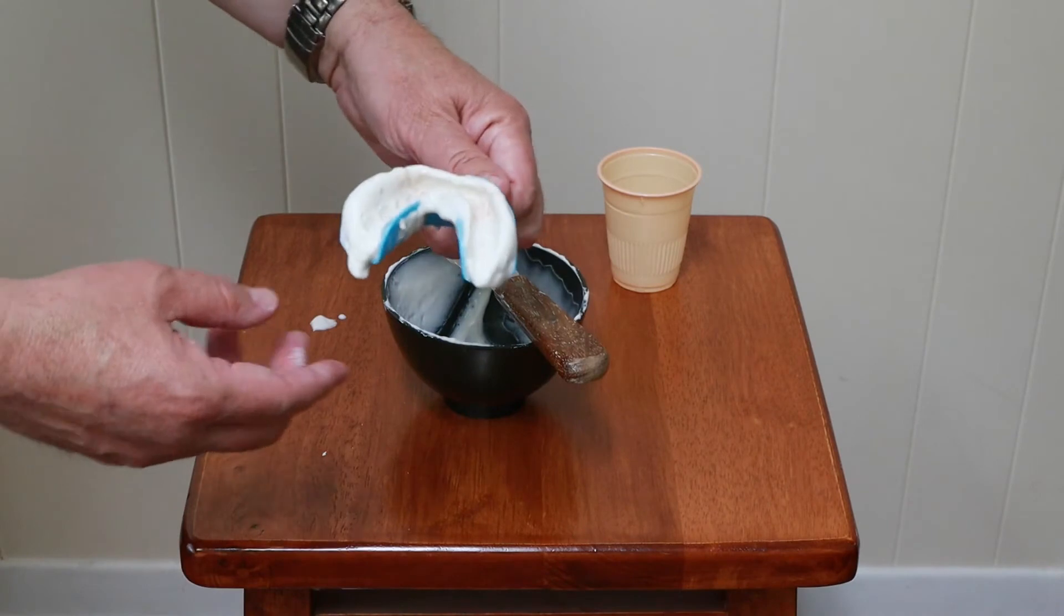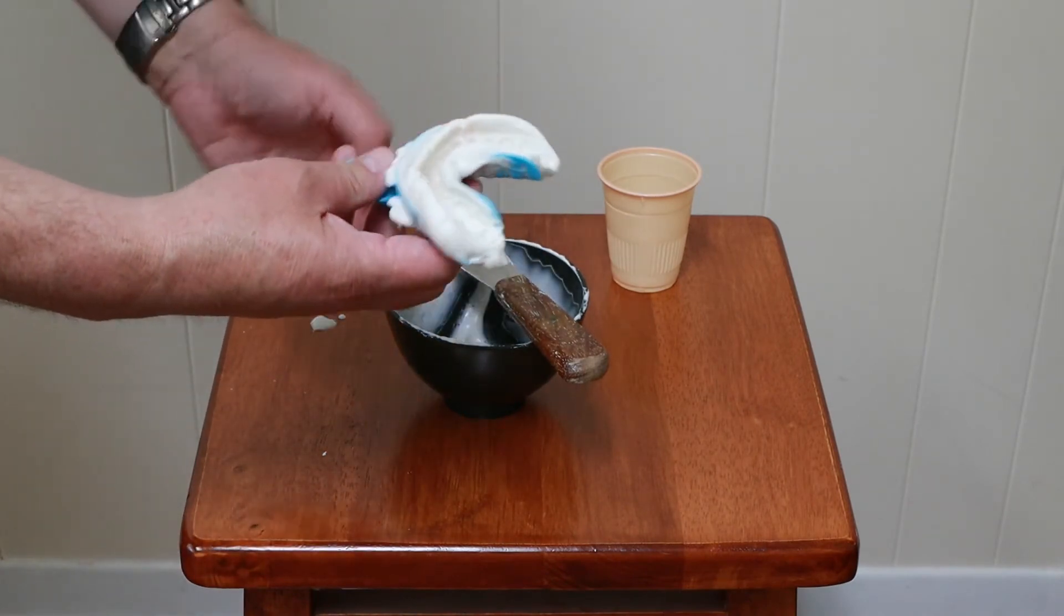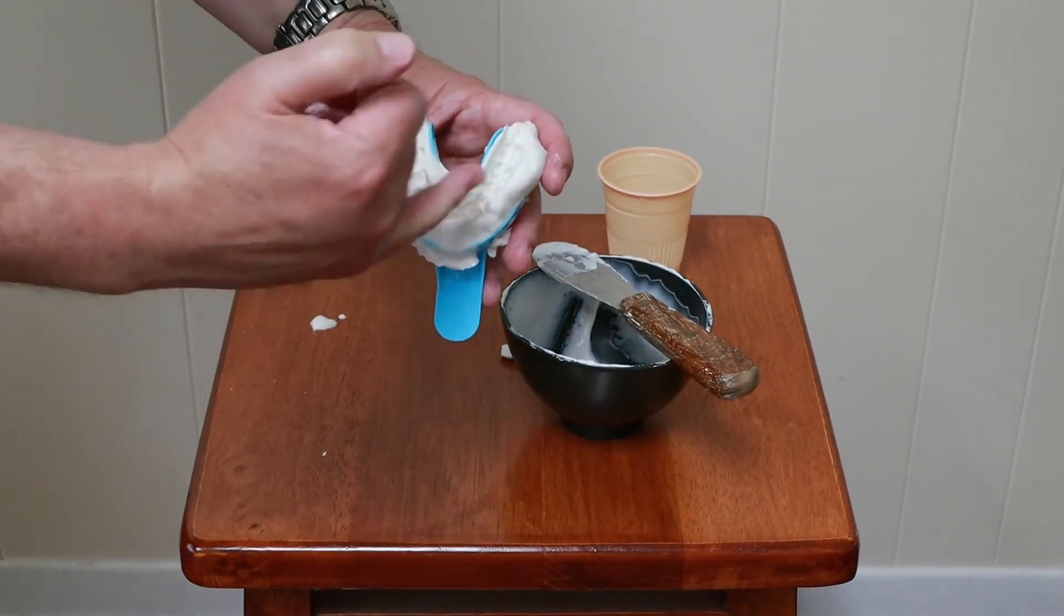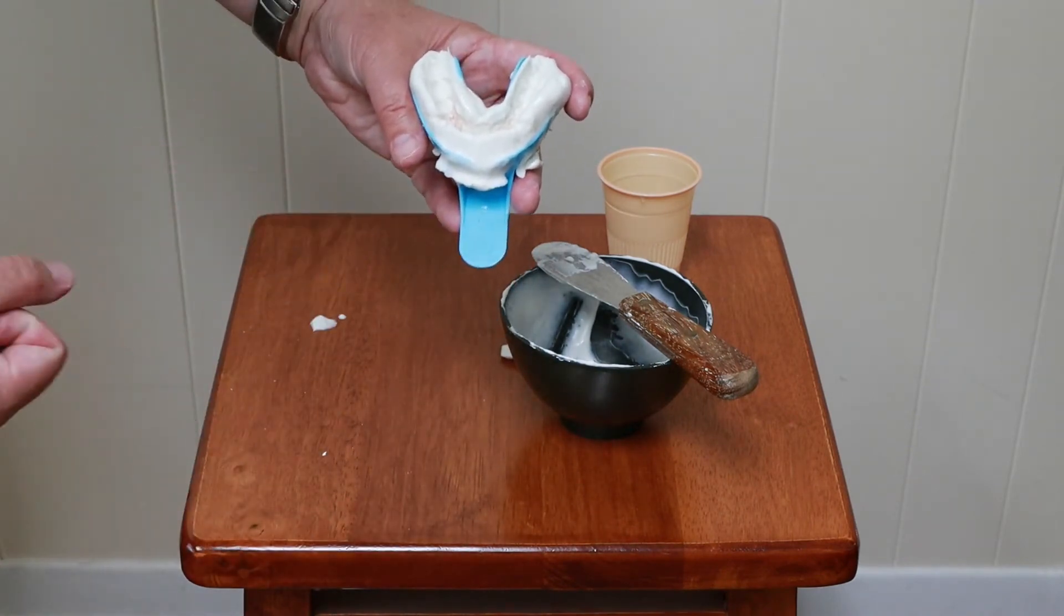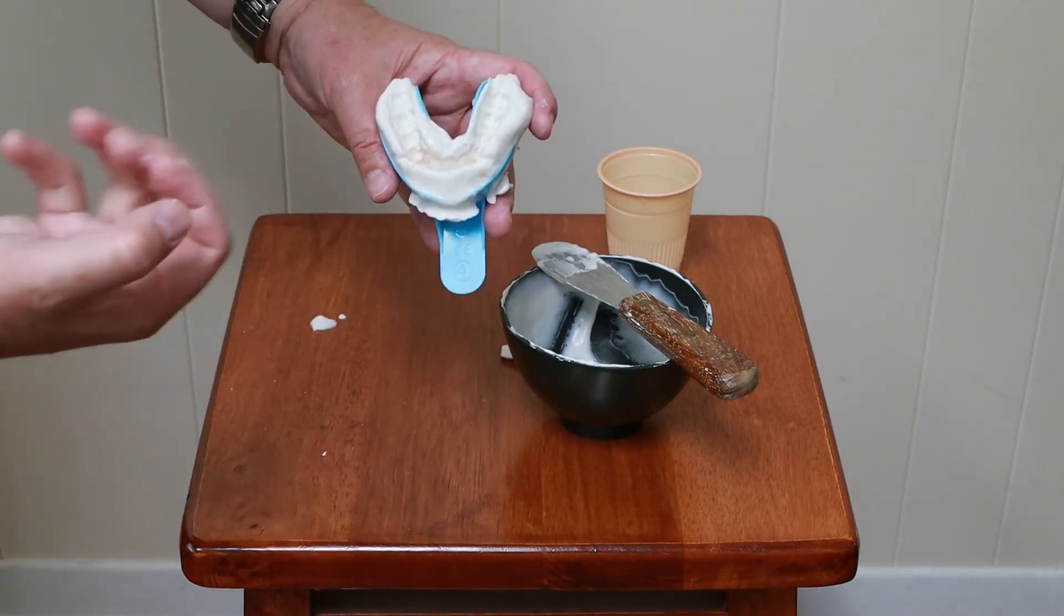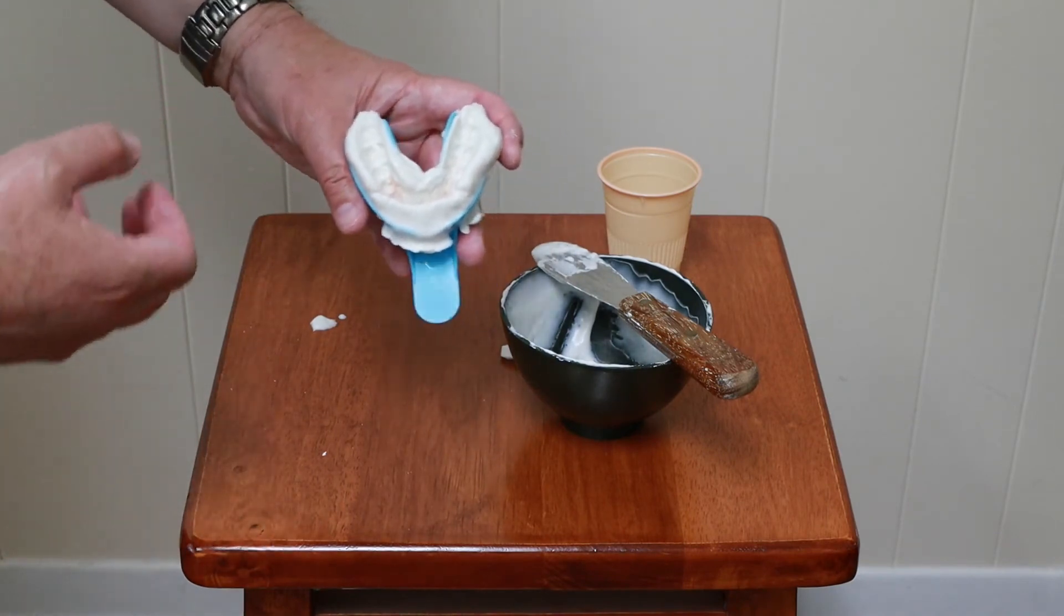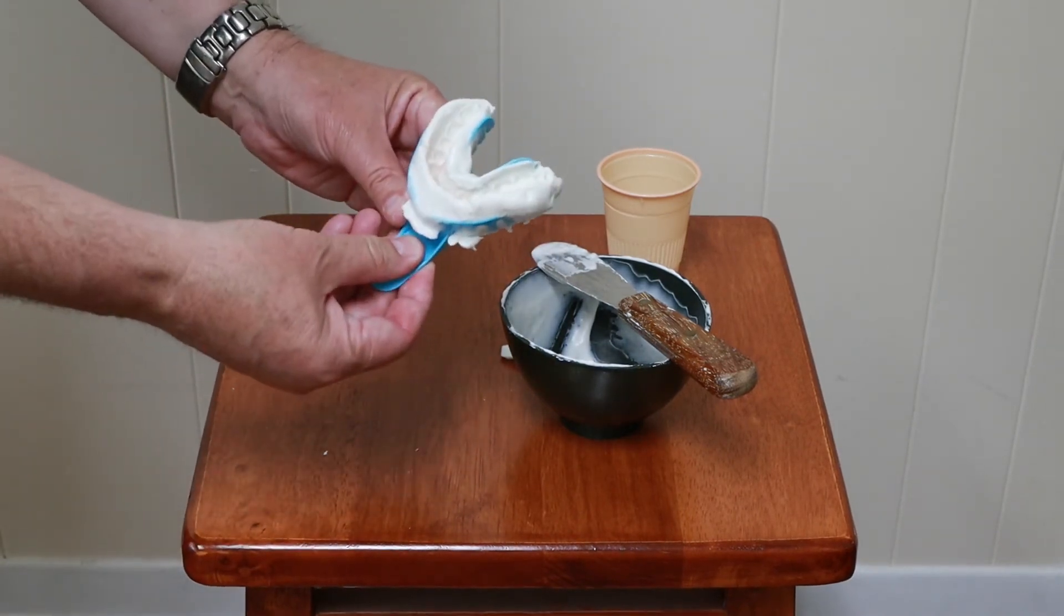So, now that I have this mold, now that I have this impression, I'm going to pour it up, basically add some dental plaster in there, let it set up, and then I will have the plaster model that I'm going to use to make the whitening tray on.